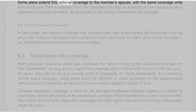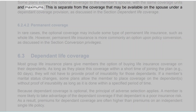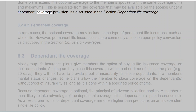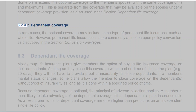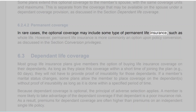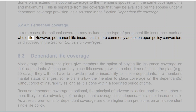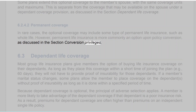Some plans extend optional coverage to the member's spouse, with the same coverage units and maximums. This is separate from the coverage that may be available on the spouse under a dependent coverage provision. 6.2.4.2 Permanent Coverage. In rare cases, the optional coverage may include some type of permanent life insurance, such as whole life. However, permanent life insurance is more commonly an option upon policy conversion, as discussed in the section Conversion Privileges.